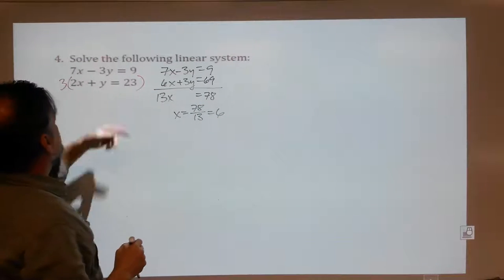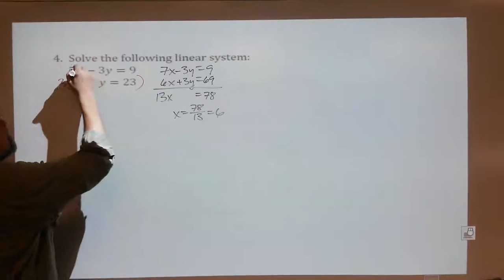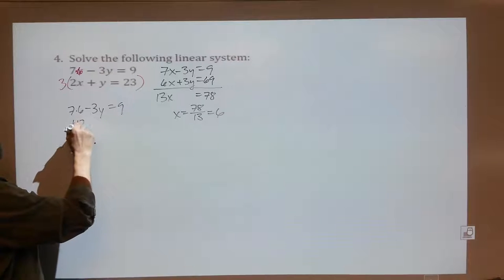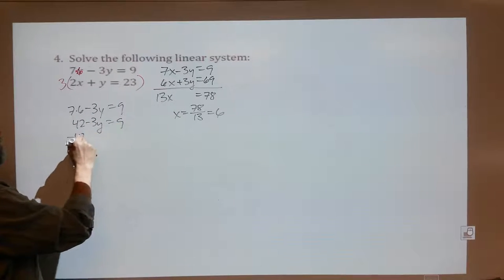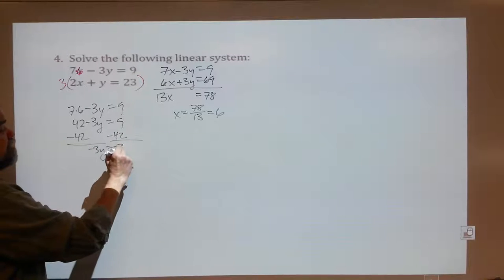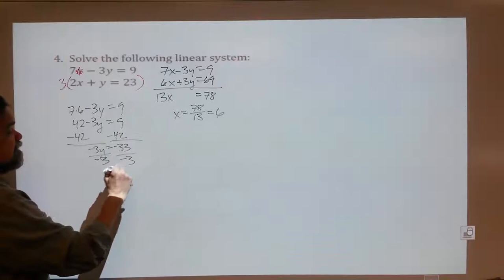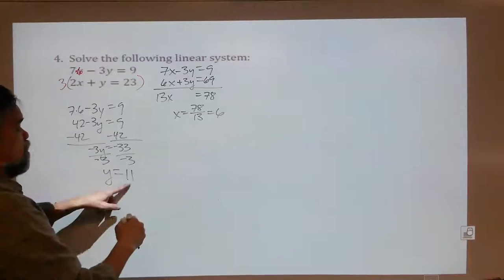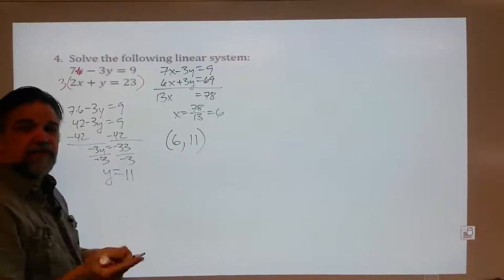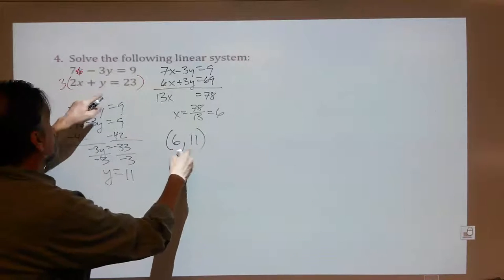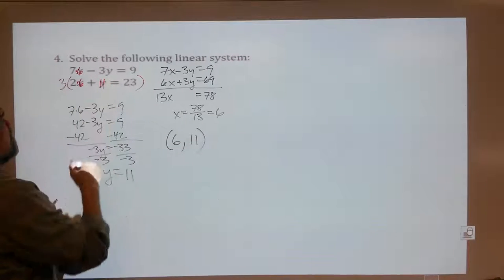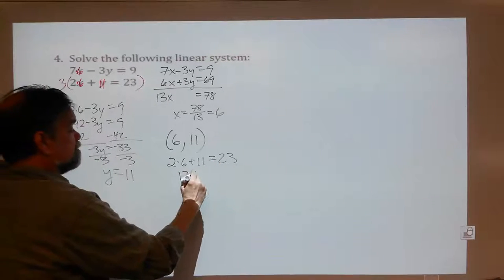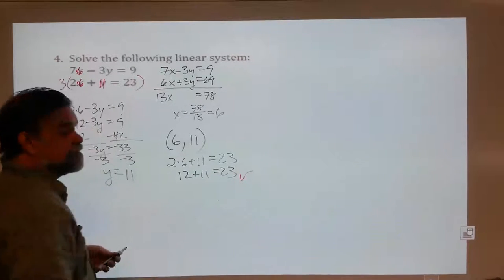Now what's y? Go back to the initial equations. If x is 6, then 7 times 6 minus 3y equals 9. So 42 minus 3y equals 9. Subtracting 42 from both sides gives negative 3y equals negative 33. Dividing both sides by negative 3, I get y equals 11. So x is 6, y is 11, that's (6, 11). Let me verify: 2 times 6 plus 11 — I hope that equals 23. Two times 6 is 12, plus 11, yes, it does equal 23. I've got the right answer.